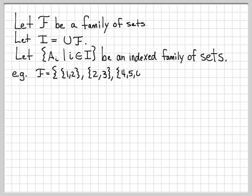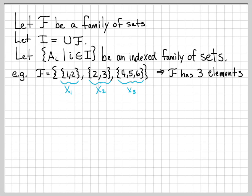Let's let the family of sets F be this specific example. There are three elements in F, and let's call those elements X1, X2, and X3. So X1 itself is a set, X2 itself is a set, and X3 itself is a set — that's why we call F a family of sets. I is the union of F, which is the union of all the elements of F. Since there are only three elements, that's X1 union with X2 union with X3.